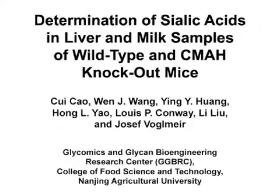The overall goal of this methodology is the detection of N-acetyleneuromanic acid and N-glyconeuromanic acid in the liver and milk of wild-type and CMAH knockout mice using HPLC analysis.